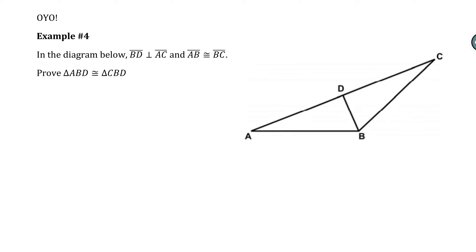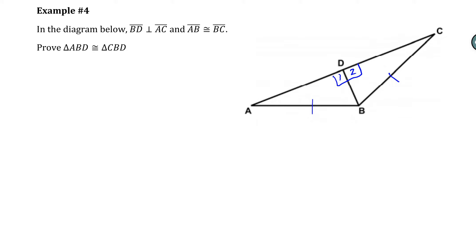So the first thing that we notice is the first given tells us that BD and AC are perpendicular. So we could show that right here, and actually I'm going to name those angle 1 and angle 2. That would be easier to put into our proof. And it tells us that AB and BC are congruent. The other thing I noticed is that BD is congruent to itself, so that would be the reflexive property.